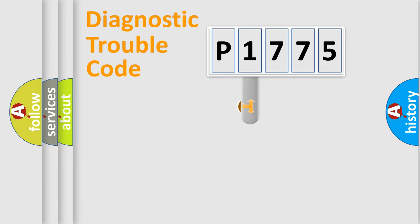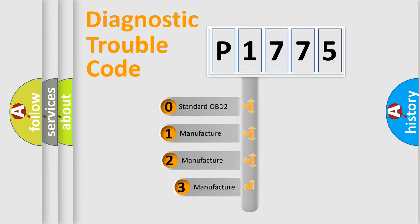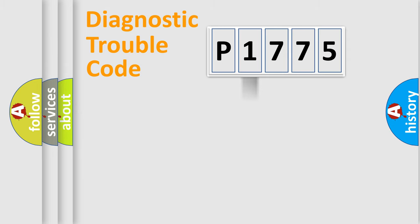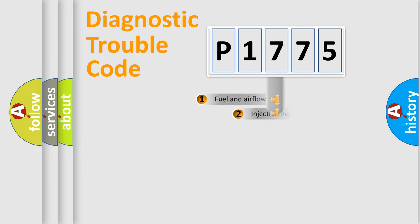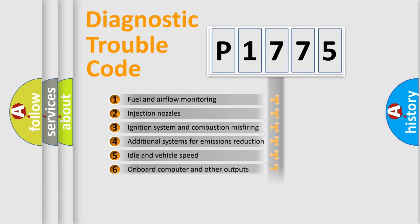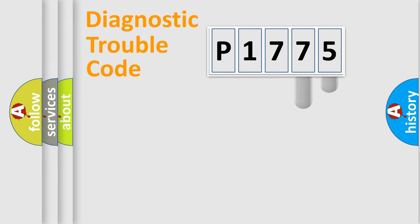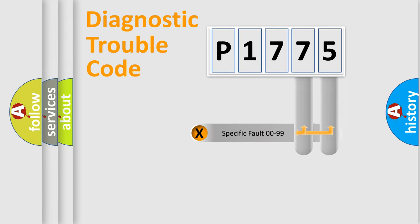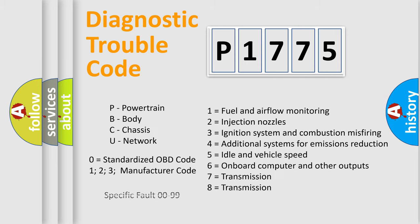This distribution is defined in the first character of the code. If the second character is expressed as zero, it is a standardized error. In the case of numbers 1, 2, or 3, it is a more manufacturer-specific expression of a car-specific error. The third character specifies a subset of errors. The last two characters define the specific fault of the group. This division is valid only if the second character is expressed by the number zero.